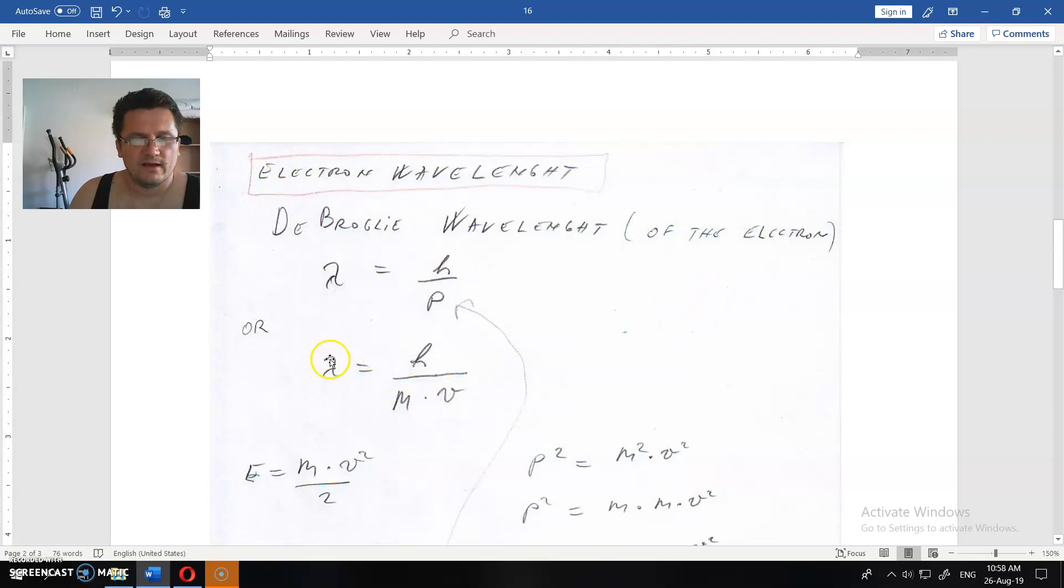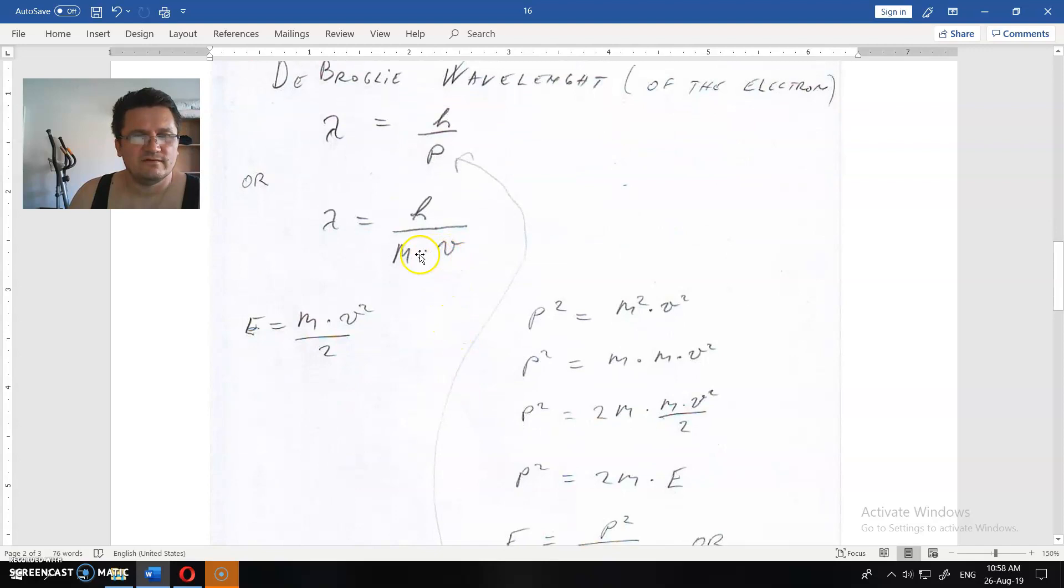So, the wavelength is lambda. That is h divided by p. h divided by p. p is momentum. Momentum is mass times speed or velocity, whatever.